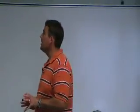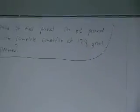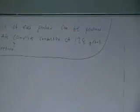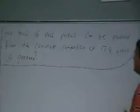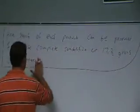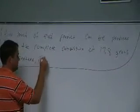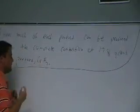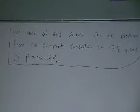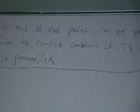When we look at this problem here, I want to know how much of each product can be produced if you completely burn 17.8 grams of pentane. The first typo that I've got here is I have to tell you what pentane is. It is C5H12. On an exam, I would have typed that in and caught that during the proofread.